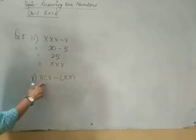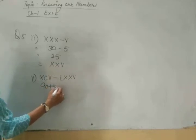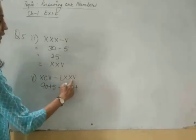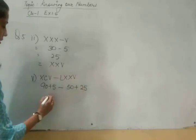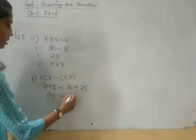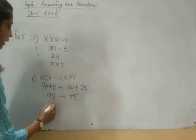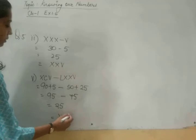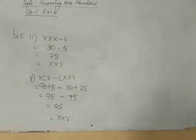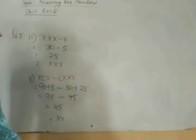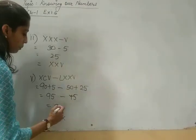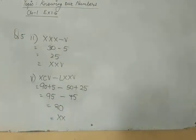Solve this also. It will become 90 plus 5 minus L means 50. 10, 10 and 25. 95 minus 75. Again 20. Answer will be XX. Clear?